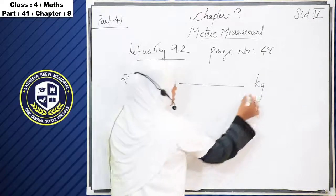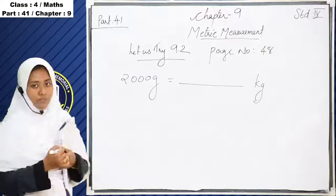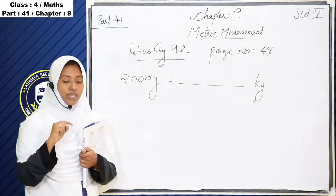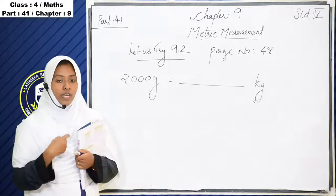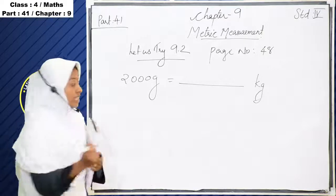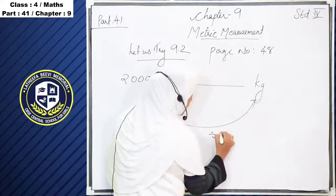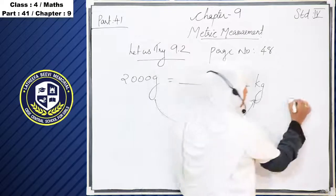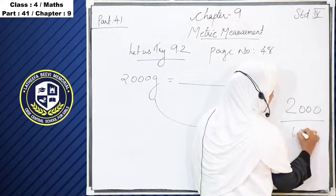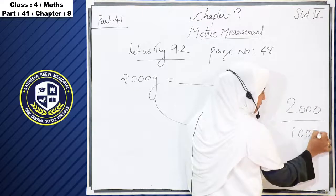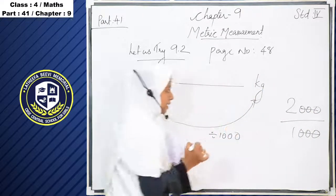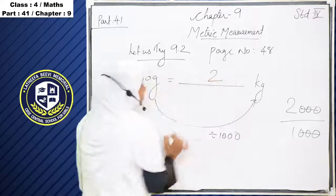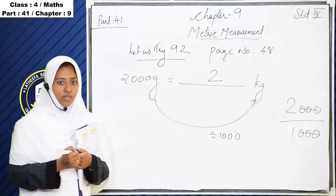Next one: 2000 gram is equal to dash kilogram. We have to convert gram into kilogram, so we divide by 1000. 2000 divided by 1000 — the three zeros cancel. So 2000 gram is equal to 2 kilogram.